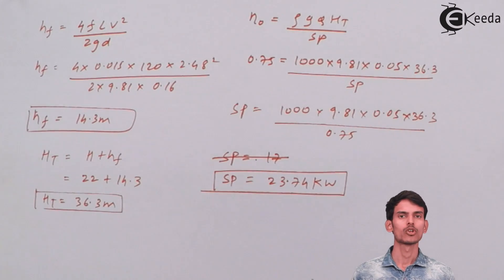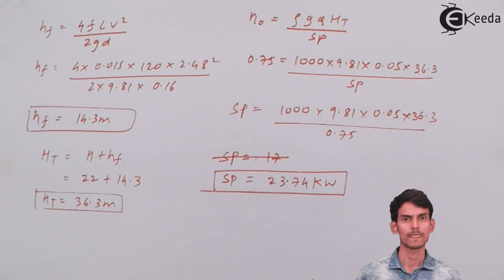23.74 kilowatts is the shaft power that has to be supplied to the pump so that it can raise the water through the given head. That was all about this question. I hope you've understood. Thank you.